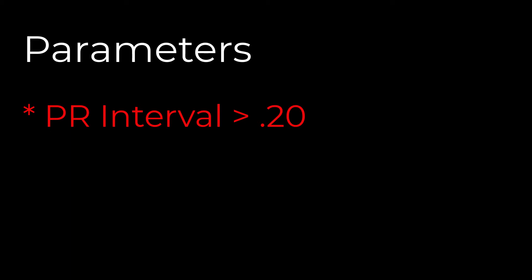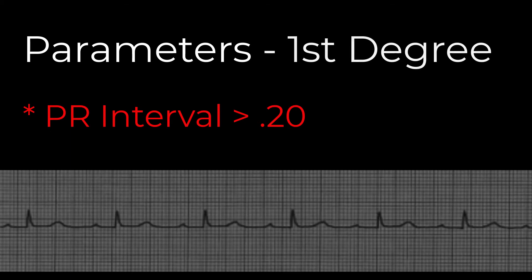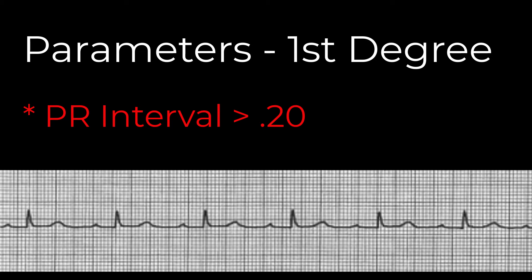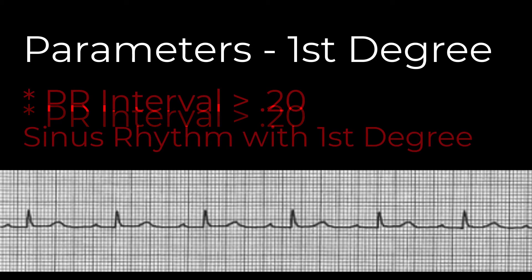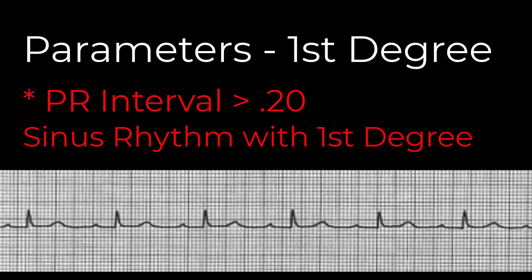Let's look at the specific criteria and parameters for each type of heart block. In a first-degree AV block, the only difference from a normal sinus rhythm is that every PR interval will be greater than 0.20 and they'll be consistent. We label it as a sinus rhythm with a first-degree block — we leave 'normal' off the name because it's not 100% normal. The significance? A first-degree AV block is a common finding in young adults, may be a normal consequence of aging in some, and can be caused by beta blockers, calcium channel blockers, digoxin, or cardiac disease. But it has no impact on cardiac output and requires no treatment or intervention.